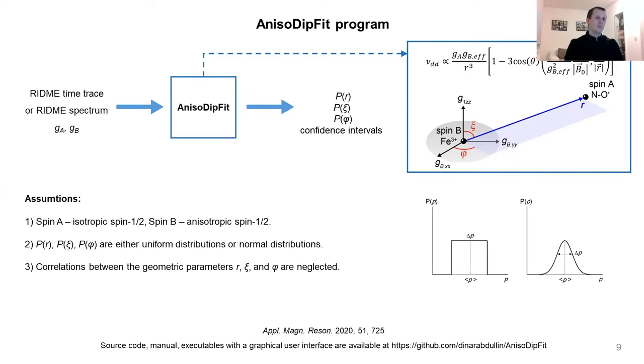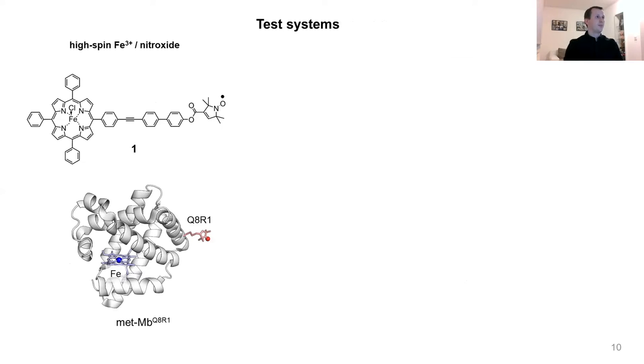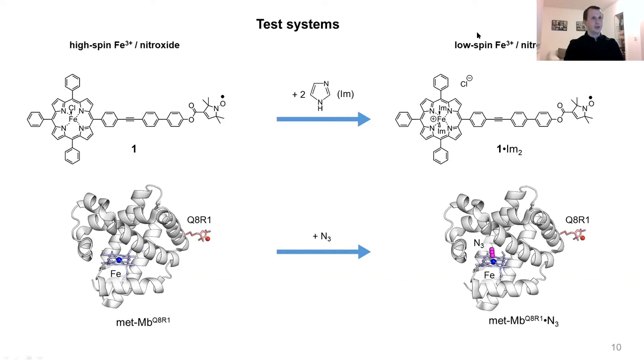So far, we prepared the theoretical basis for the RIDME-based distance measurement between intrinsic iron ions and nitroxides. Then we went for the corresponding experiments on a few model systems. For the high-spin iron-nitroxide pair, we prepared two model systems: one which is based on iron-TPP complex linked with a nitroxide, and the second test system was metmyoglobin which was mutated at site Q8 and then spin-labeled. The nice thing about these model systems is that they can be easily converted into the low-spin iron-nitroxide model system just by adding a large excess of either imidazole or azide. So in the end, we end up with four test systems.